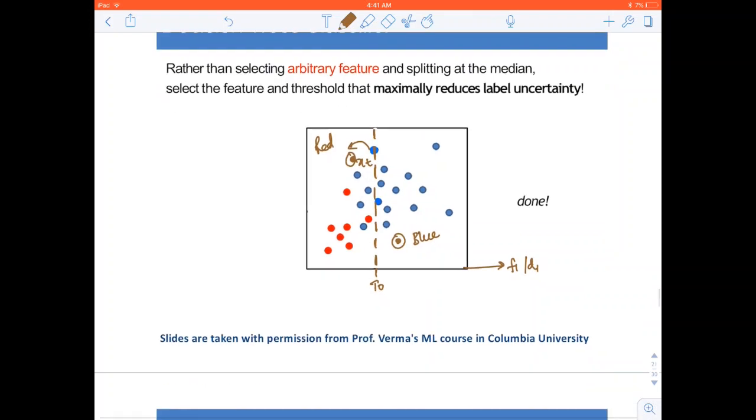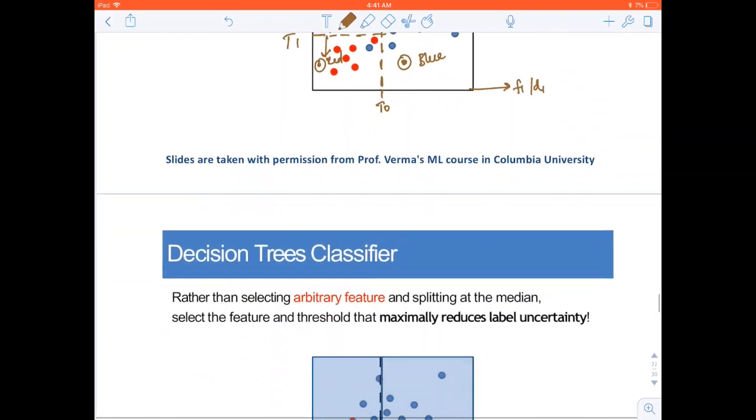We know that towards the right, it would be blue and towards the left, it would be red. We can further reduce the uncertainty by again choosing now feature 2 and threshold T1 and dividing here. Now if XT lies here, it will be red. If XT lies here, it will be blue.